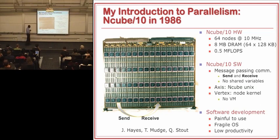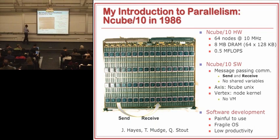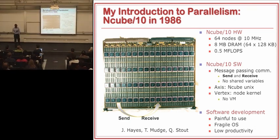After this experience, I thought parallelism was interesting, but it was clear that the hardware was much more capable than the software. The hardware was interesting, but the software made it difficult to use. Based on that, I decided the more interesting thing to do in architecture was to work on improving single-chip, single CPUs. That's what I did for my PhD, and I left parallelism by the side.